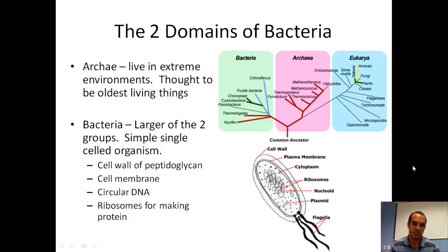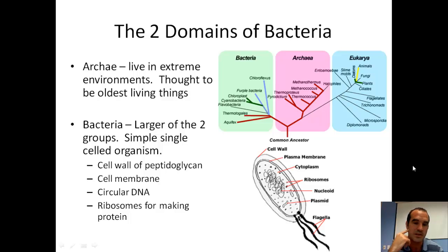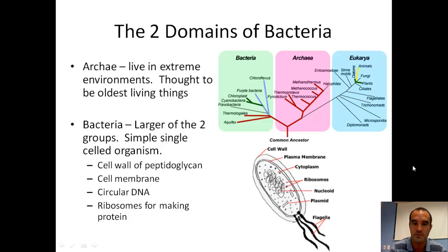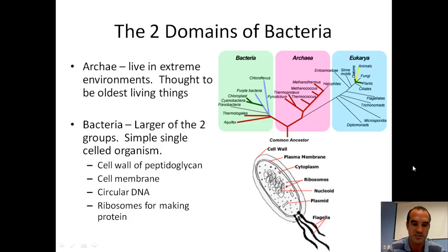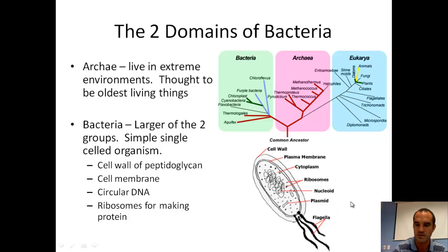Now we're going to move from viruses to bacteria. Bacteria are divided into two groups. Archaebacteria are the ones that live in extreme environments and are thought to be the oldest living things on Earth — the only living things that could have tolerated early conditions of Earth. The second group is bacteria, the larger of the two. They're single-celled forms of life with a cell wall made of peptidoglycan, a cell membrane, circular DNA, and ribosomes for making protein. Some of them have flagella for movement to get to a more suitable environment.